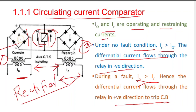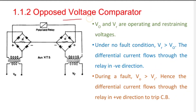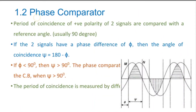For more accurate results, the bridge rectifier can be replaced by a precision rectifier employing operational amplifiers. In the opposed voltage type comparator, V0 and Vr are the operating and restraining voltages. V0 is given for one CT and Vr for another. When Vr is greater than V0, the differential current flows in the negative direction; if fault occurs and operating quantity exceeds restraining quantity, the differential current flows in the positive direction to trip the circuit breaker.